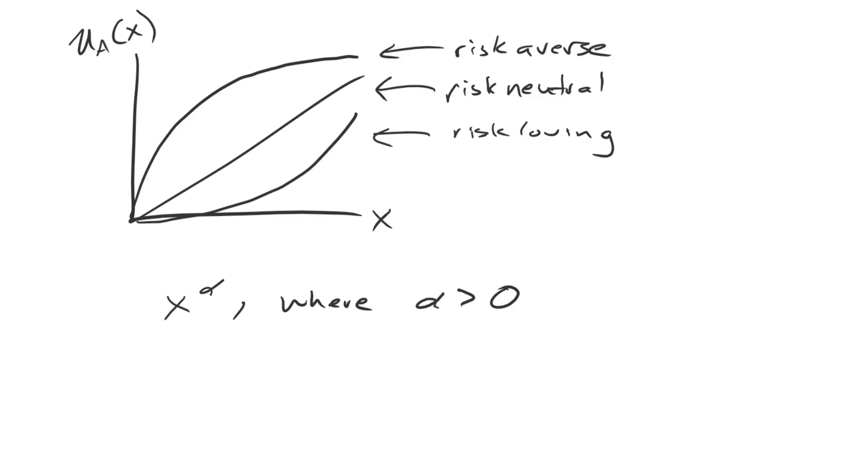So what does that mean? Well, think about what this function looks like right here, this risk-averse function. If alpha is between zero and one, then that is giving you essentially a function that looks a lot like a square root, which increases more at the beginning and starts tapering off later on. So this is actually corresponding to risk-averse preferences.